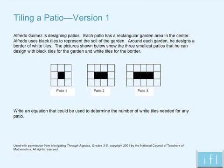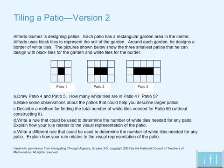In version 1, students are asked only to create an equation that would be used to find the number of tiles in any patio. But in version 2, the task begins by asking students to draw the next two patios in the sequence and then to make as many observations as they can about the patios they have in front of them.